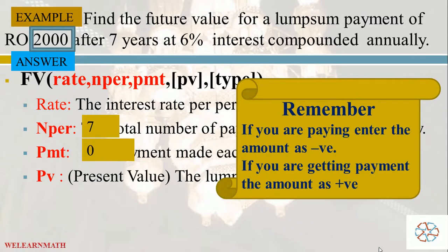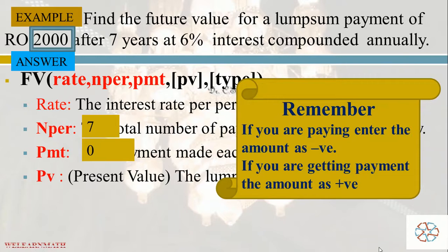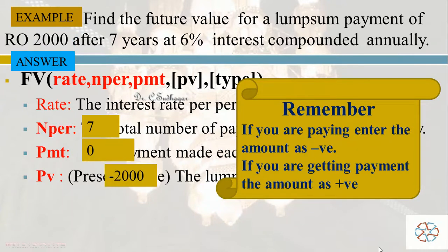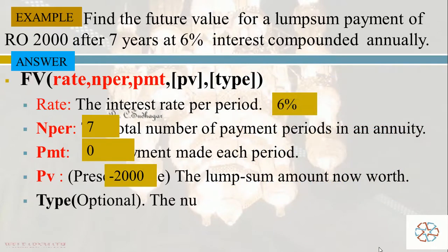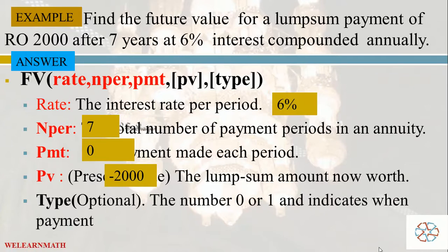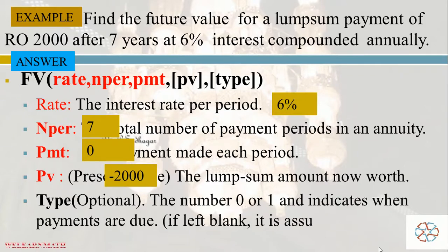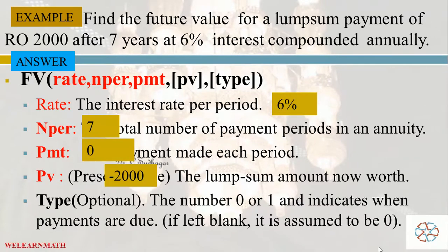One important thing to note: whenever we are paying money into the account, we enter it as a negative value. If you are receiving payments from the account, it should be positive. Since we are paying the money in, it should be entered as minus 2000. There is no outstanding payment, so Type can be 0 or left blank. Now let us go to the Excel sheet and see how the formula works.